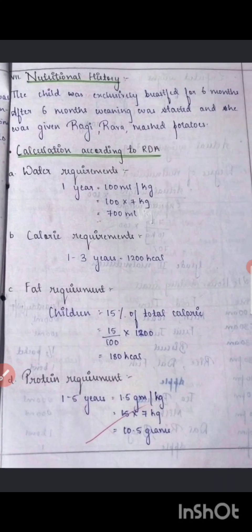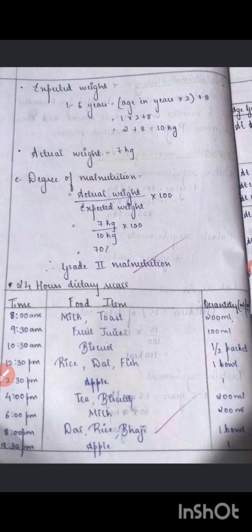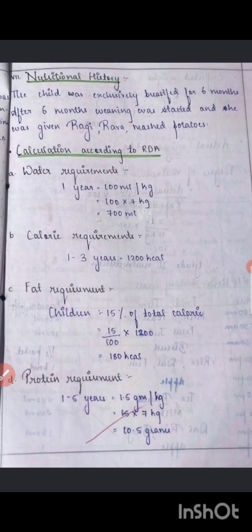Then comes the nutritional history. Mention for how long the child was on breastfeeding and when supplementary nutrition was started and with what. Then comes the calculation according to RDM — the water requirement, calorie requirement, fat requirement, protein requirement, degree of malnutrition, and expected weight. There are different formulas for different age groups. If you want me to explain those, mention it in the comments.